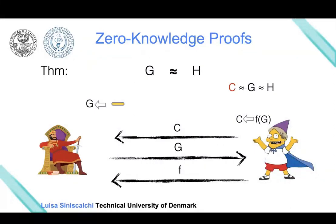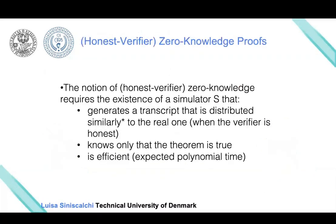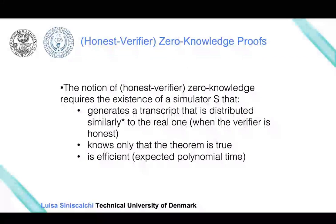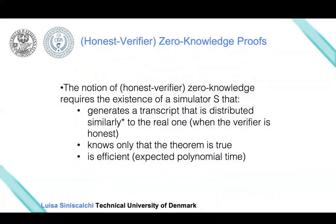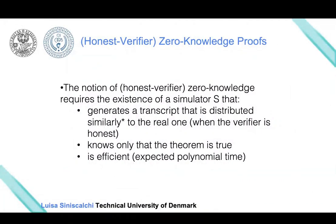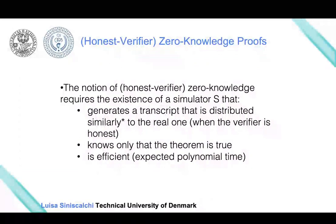We could define a new algorithm called a simulator. The job of the simulator is to produce a transcript—a series of messages—such that these messages look like a transcript between the honest prover and the verifier. In other words, the simulator produces a transcript, and a third entity cannot distinguish whether this was the output of the simulator or an honest interaction between the prover and the verifier.